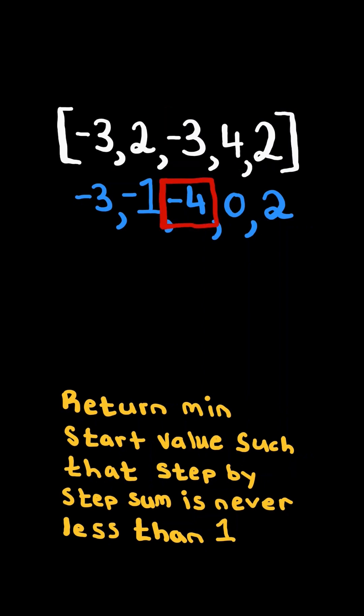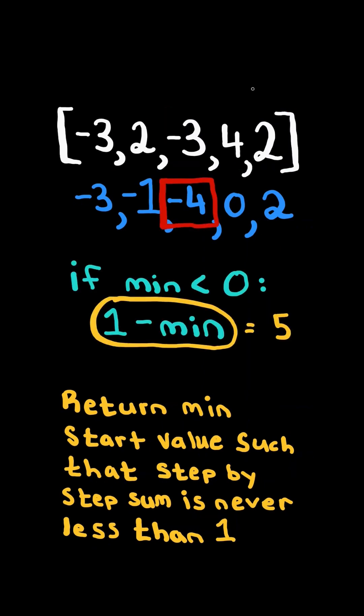Consider the minimum sum. If the minimum is less than 0, we need to offset it by adding 1 minus the minimum as the starting value.